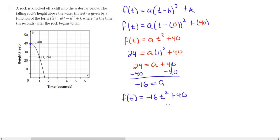So we plug in negative 16 for a and get the function f(t) equals negative 16t squared plus 40. Since h was zero, this is also our equation in standard form. Those are all the concepts covered in module 19.3.